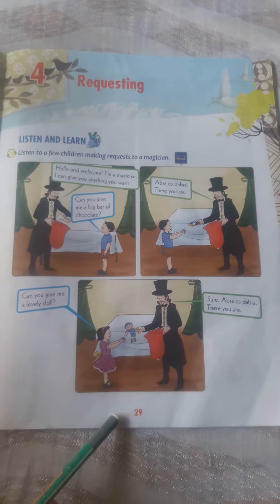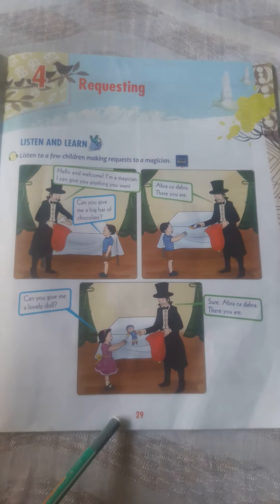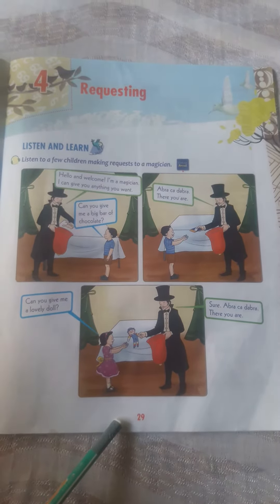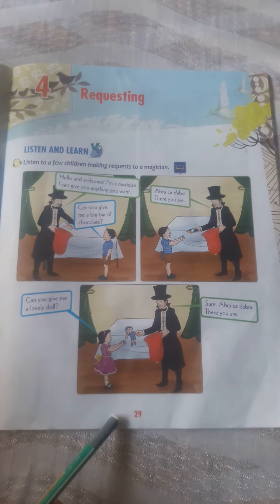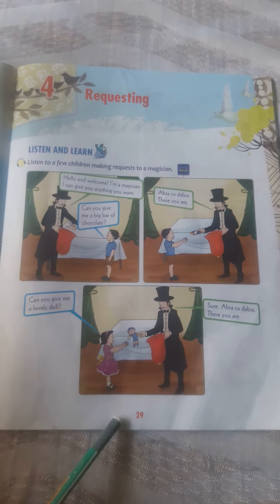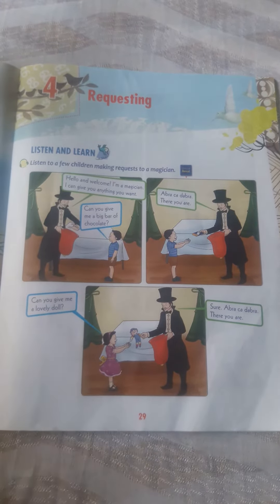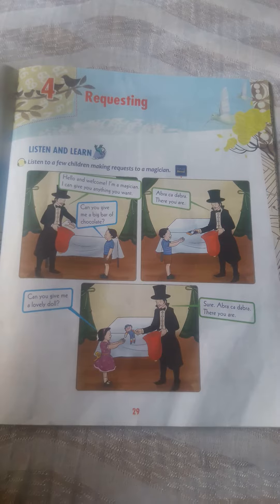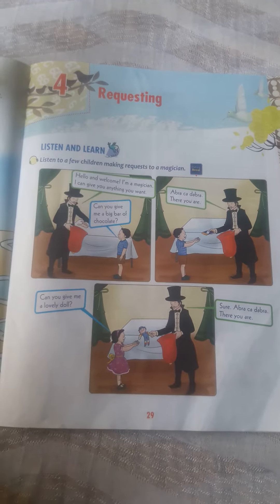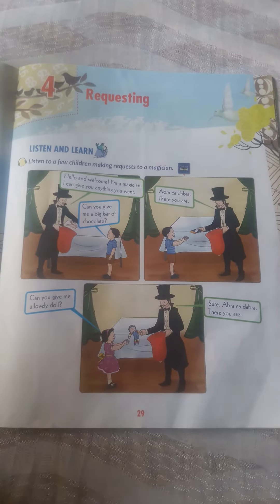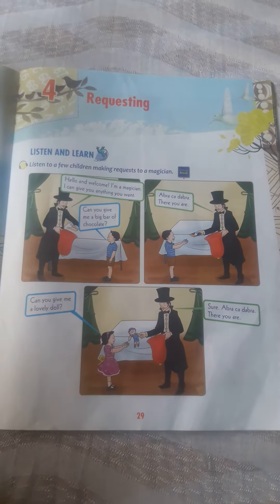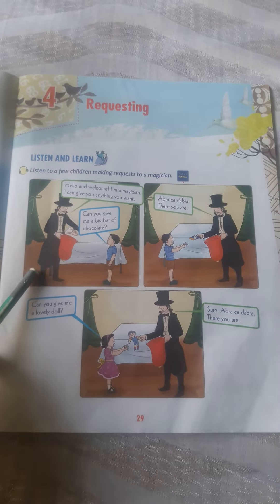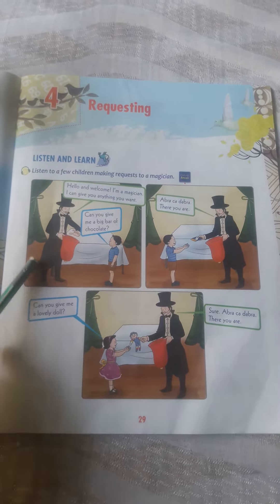In this chapter we learn how we request permission for something from someone, and which word we use for requesting. We use 'can' and the verb. So first of all we read this page.